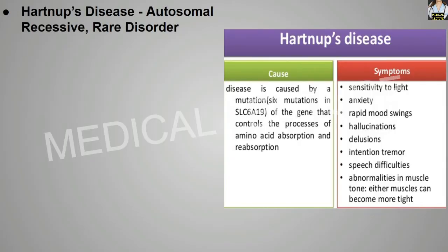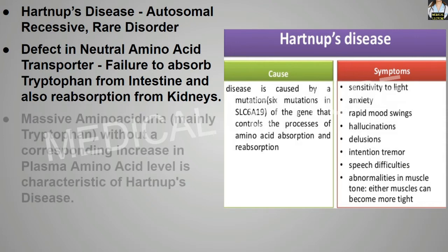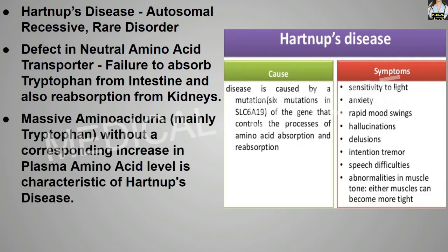Hartnup disease is an autosomal recessive and rare disorder. In Hartnup disease, there is a defect in the neutral amino acid transporter, causing failure of absorption of tryptophan from the intestine and failure of reabsorption of tryptophan from the kidneys. There occurs massive amino aciduria mainly of tryptophan without a corresponding increase in the plasma amino acid level, which is the characteristic feature of Hartnup disease.